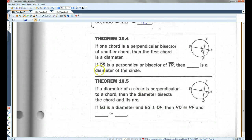Alright, theorem 10.4. If one chord is a perpendicular bisector, remember, perpendicular means it makes a 90 degree angle, and bisector means it cuts it exactly in half. So, if one chord is a perpendicular bisector of another chord, then the first chord is a diameter.